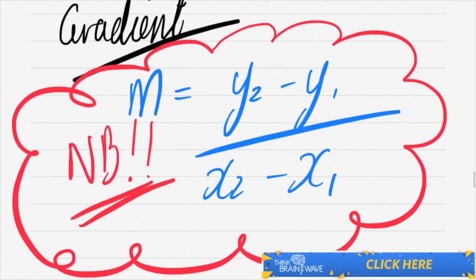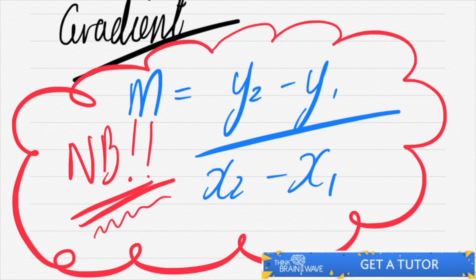Let's talk about the gradient now. The gradient is so important. You really need to get this. Your gradient is y2 minus y1 over x2 minus x1, sometimes written as delta y over delta x, meaning the change in y over change in x.